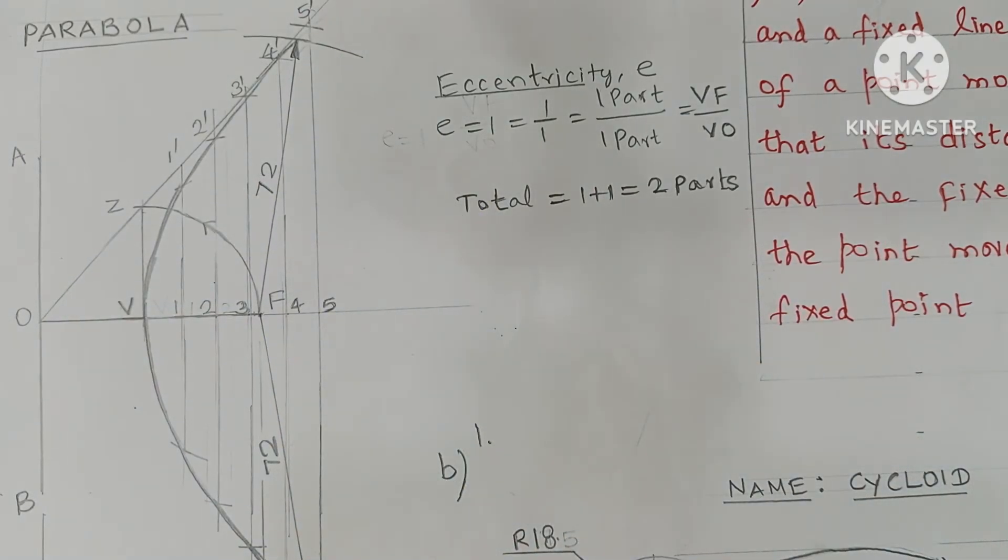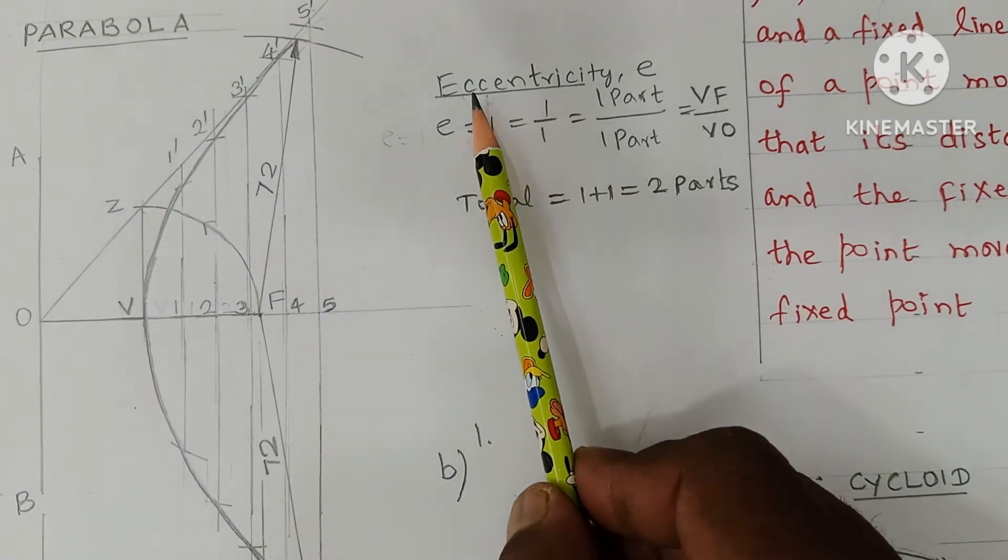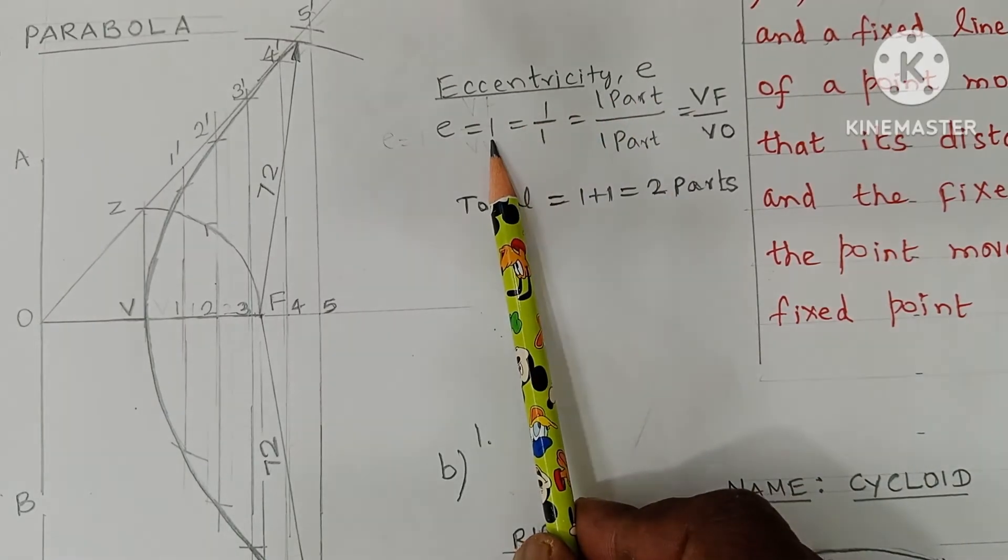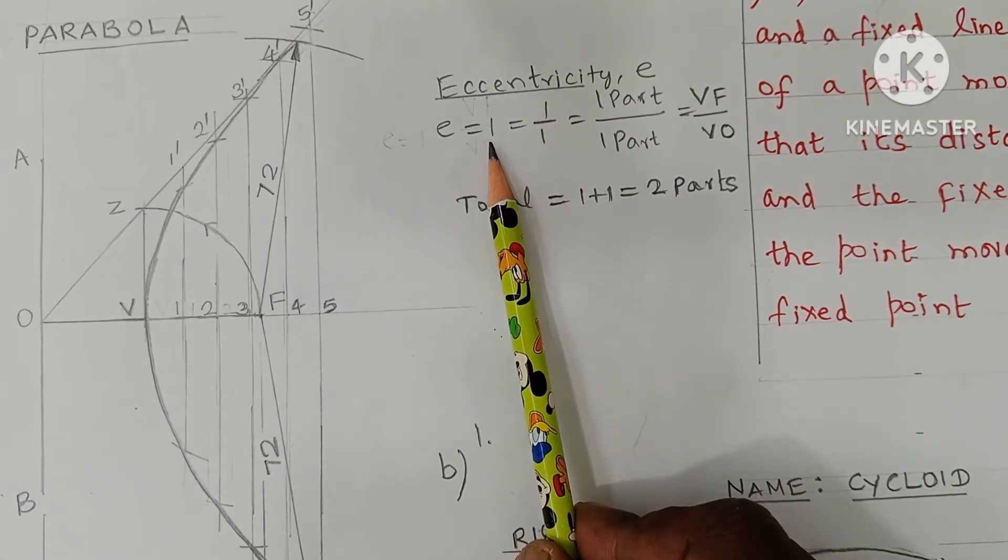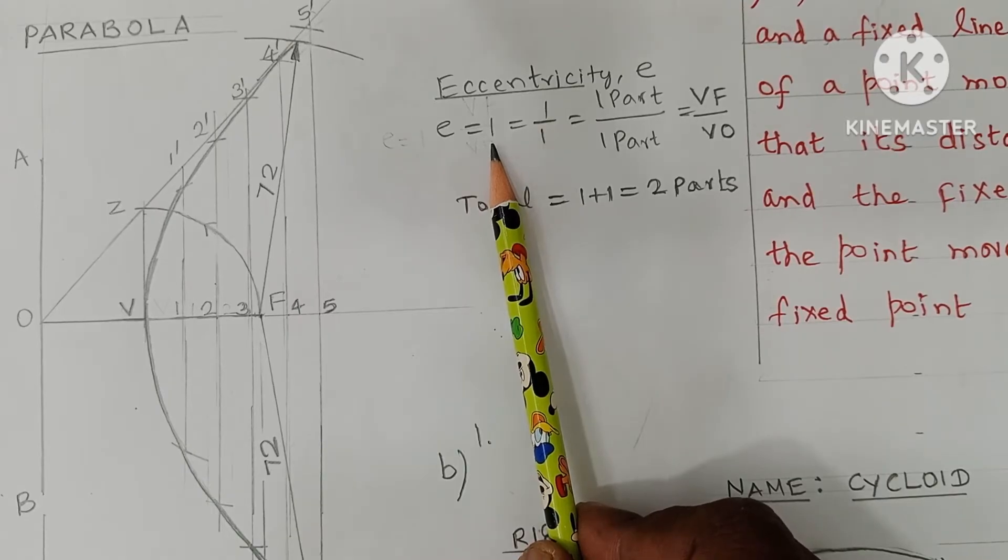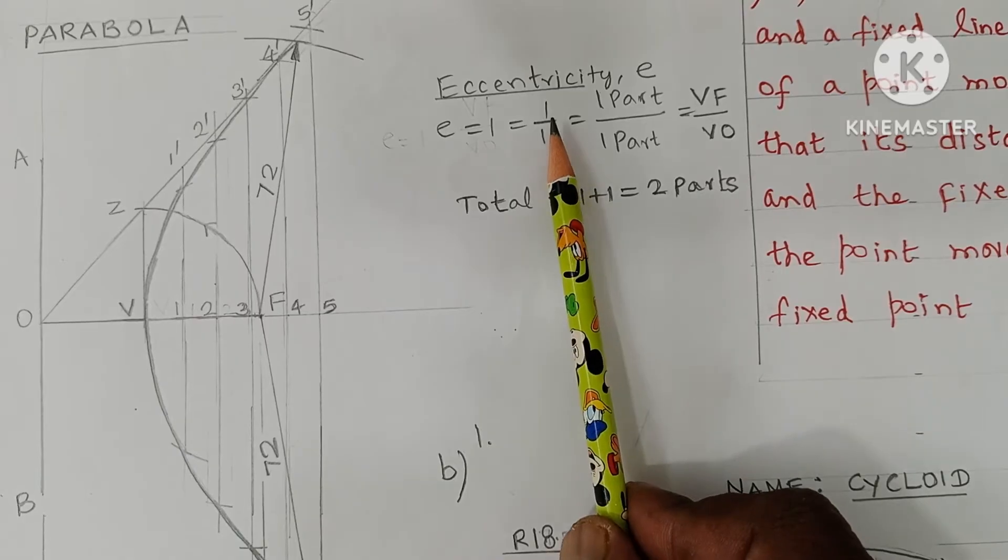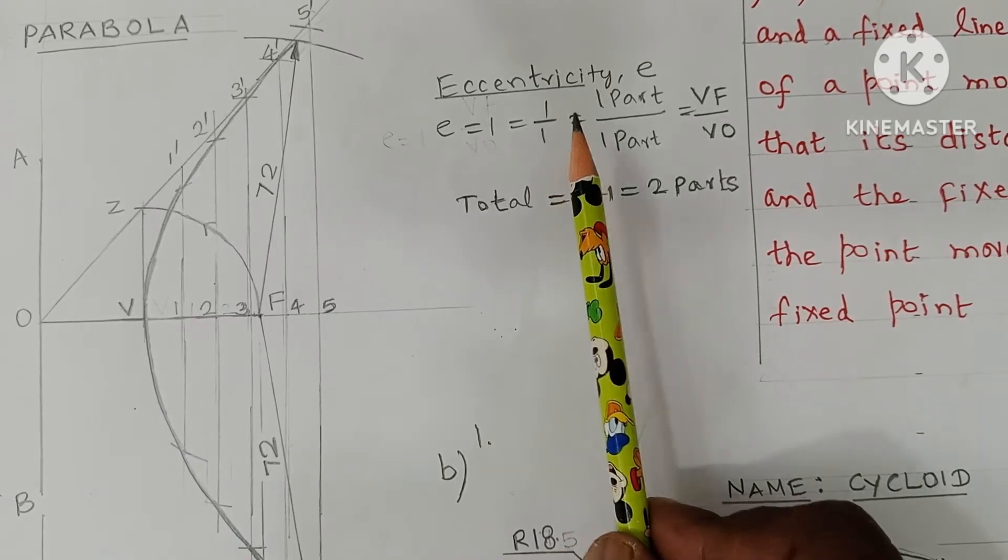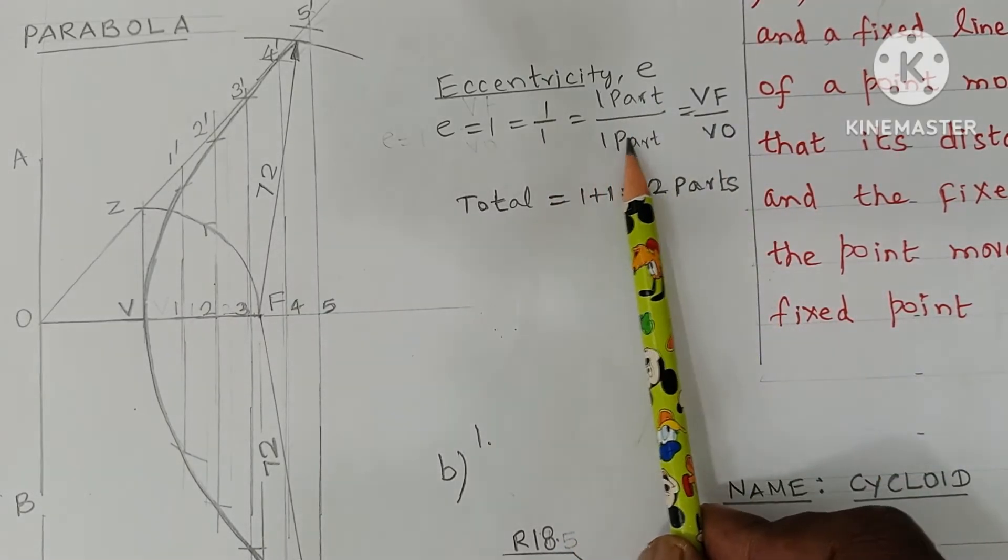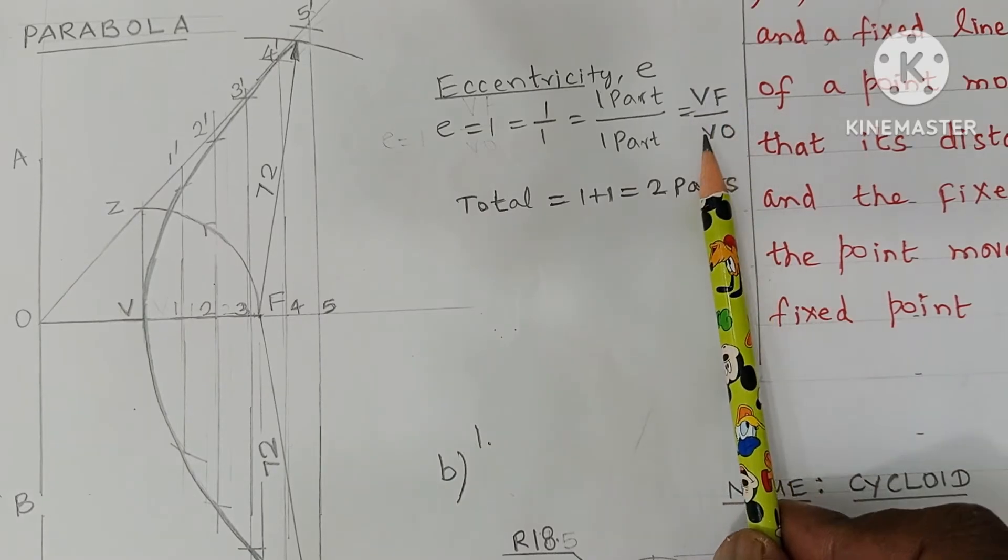On the side of the drawing sheet, you have to work out a simple calculation. Eccentricity for parabola is 1. Usually e is 1, written as 1 by 1. Numerator 1, denominator 1, and 1 by 1 is 1 only.